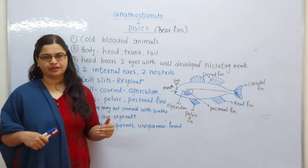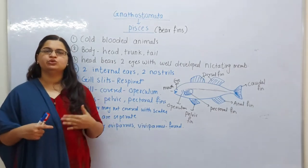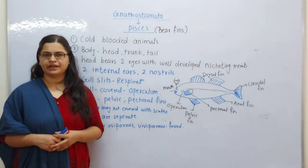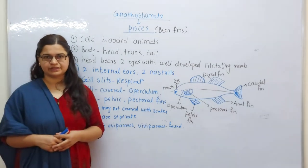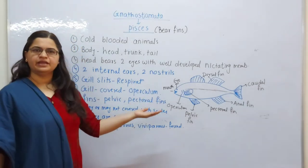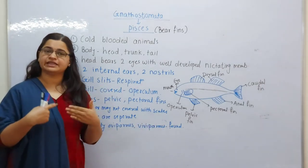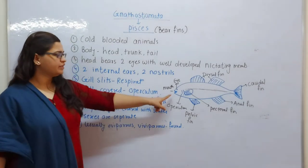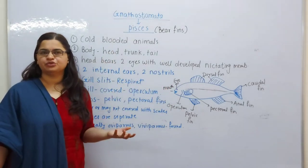We will consider true fish in Pisces. Pisces, as we have already discussed, should have a two-chambered heart. They are cold-blooded animals and their main habitat is aquatic. Fish have many fins — they don't have legs and hands like us; instead they have fins, which are responsible for swimming and locomotion.